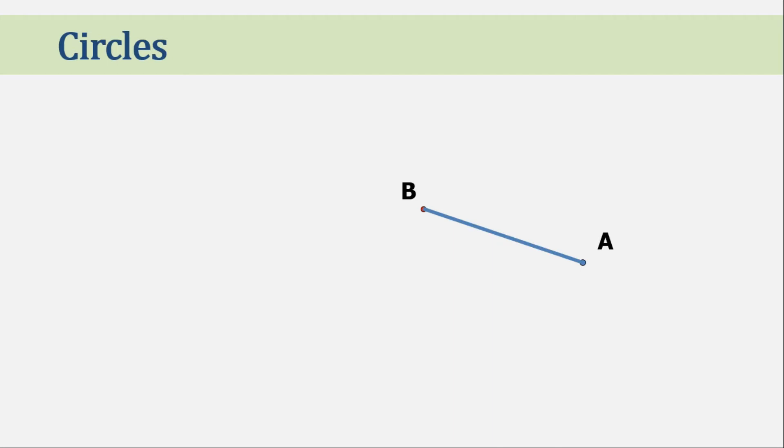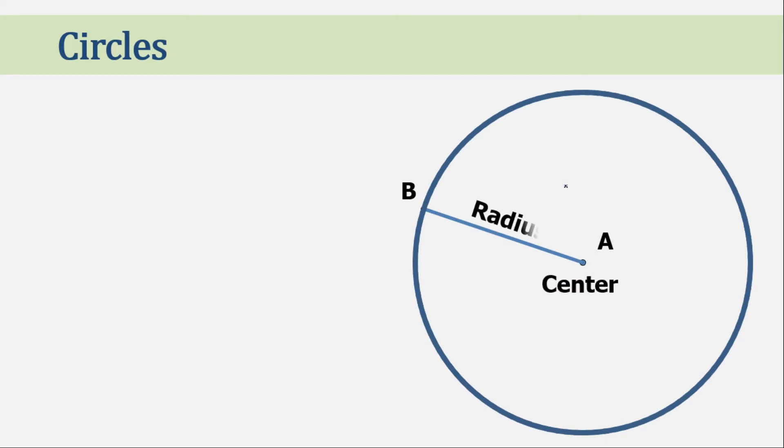Now imagine other points that have the same distance as point A and point B. And until we fill all this gap, we can create a shape we call circle, where A is the center and the distance between the center and all other points is called radius.